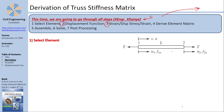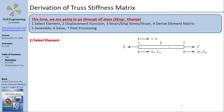Step number one is selecting my element. I have selected a bar element, or truss element, or axial force element. Applied forces act on both sides — in this case, tension forces. This element is connected between node 1 and node 2. Its characteristics are length L, cross-sectional area A, and elastic modulus E. In the finite element method, you have a local axis X going left to right. At node 1 you have degree of freedom U1 and force F1x; at node 2 you have U2 and F2x.